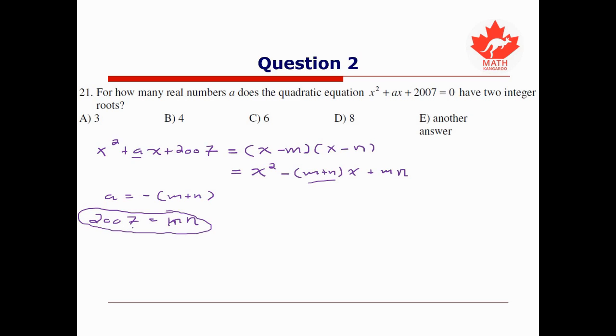So the first thing to do is completely factorize 2007. First notice that the sum of its digits is 9, which is divisible by 3, so 2007 is divisible by 3. After performing some long division, you should get 2007 = 3 × 669. We've got a bunch of 6's and 9's here, so perhaps that's divisible by 3. If you check again, this is 3 × 223.